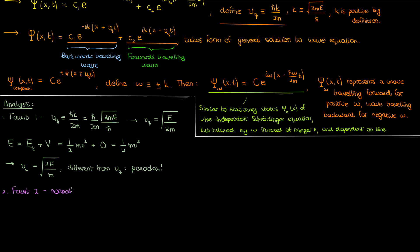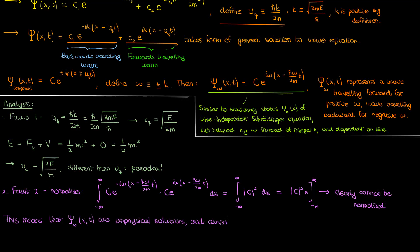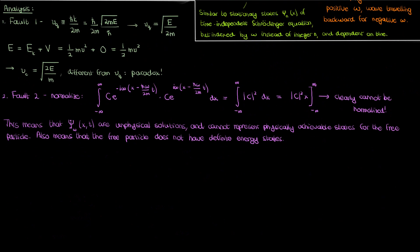The second fault is seen when you try to normalize this component solution. If I take the integral over the entire spatial domain of capital Psi omega conjugate times capital Psi omega, the powers on the exponential add to zero, and e to the zero is just one. When you integrate this you get the modulus squared of c times x, but since the limits on x are negative infinity to infinity, you get an infinite result no matter what c is. So this is clearly not normalizable and clearly unphysical. These component solutions capital Psi sub omega are by themselves unphysical and cannot represent physically achievable states for the free particle — meaning the free particle does not have definite energy states.